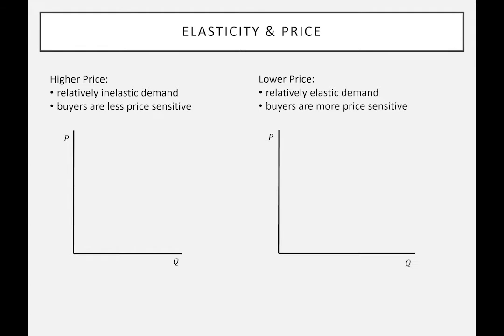We can look at this in terms of elasticity. The simple, intuitive idea is that if we look at the demand curve for foreigners, it's relatively inelastic — these buyers are less price sensitive — so we're going to charge them a higher price. If we look at the market for local people, their demand curve is relatively more elastic; they're more price sensitive and have alternatives.